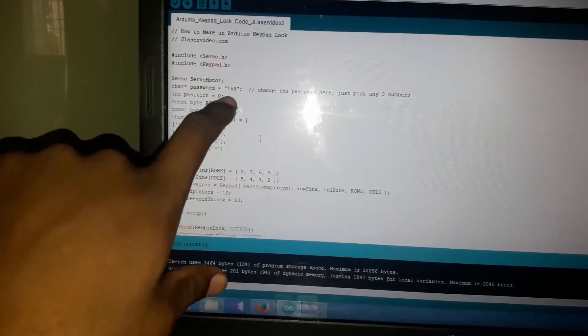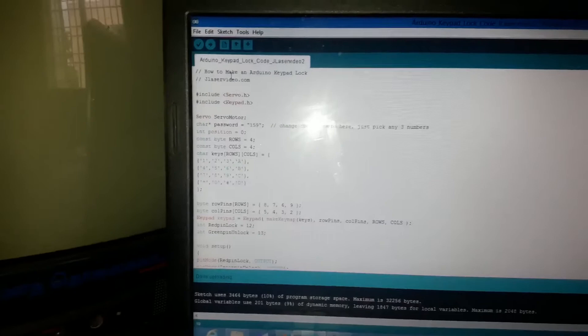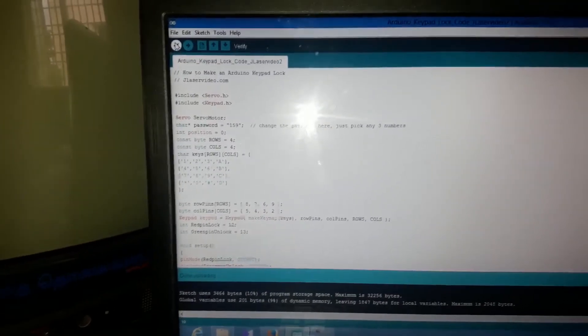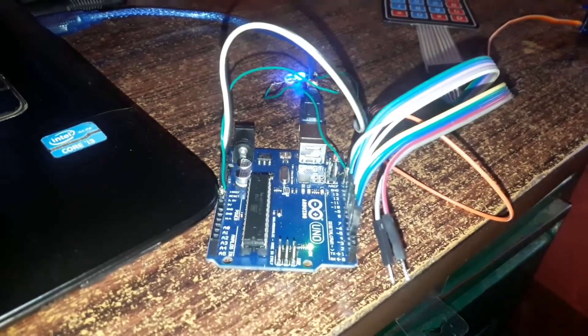You can see the password. I set as 159. This is the correct password. Then, first by verifying. Then, I am just uploading the data to the Arduino. It starts uploading.